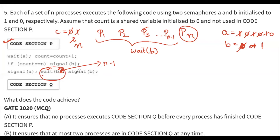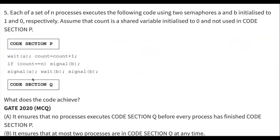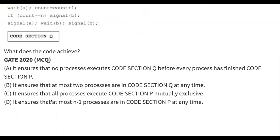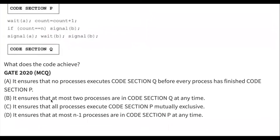So signal(B) is called, one of the N-1 blocked processes can execute, then again signal(B), and it enters code section Q. This ensures no process executes code section Q before every process has finished code section P — every process must have executed code section P, only then count becomes N, only then B is signaled, and processes enter code section Q one by one. So option A is correct.